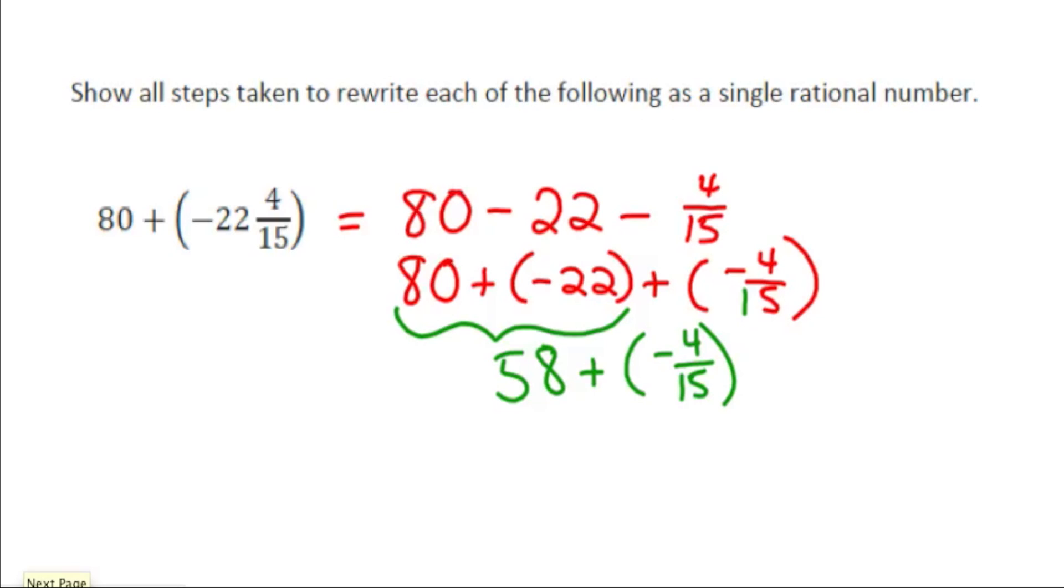In order to subtract, we're going to think of 58 as 57 and 15 fifteenths. 15 fifteenths being the one whole plus the 57, making it 58 plus we're taking away the negative 4 fifteenths. So we have 57 with 15 fifteenths, and when we subtract off the 4 fifteenths, we'll still have 57 but instead of having the 15 fifteenths, we'll only have 11 fifteenths. So the answer as a single rational number is 57 and 11 fifteenths.